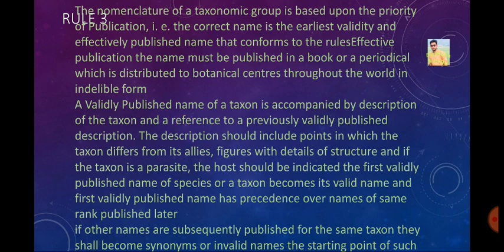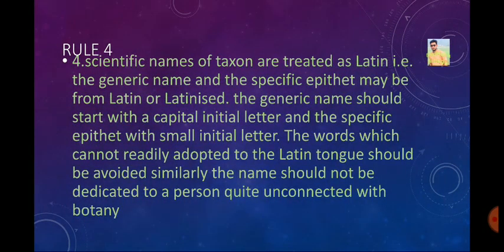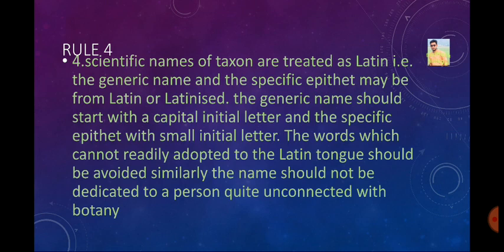Rule number 4 states that scientific names of taxonomic groups are treated as Latin. The generic name or specific epithet may be from Latin or a Latinized word, so the whole scientific name should be Latinized. The generic name starts with a capital letter and the specific epithet starts with a small letter. Words that cannot be readily adapted to the Latin tongue should be avoided. Names should not be dedicated to a person unconnected with botany.